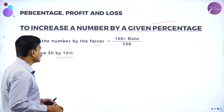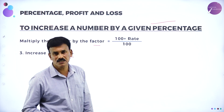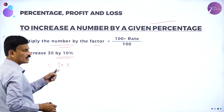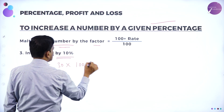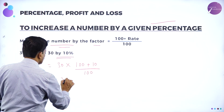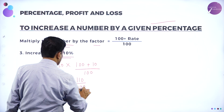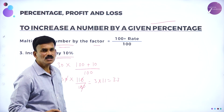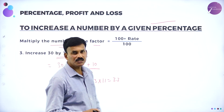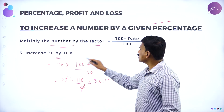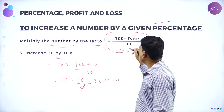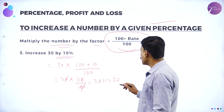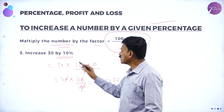Now let us take an example: increase 30 by 10 percent. So this is equal to 30 multiplied by the factor — 30 into 100 plus 10 divided by 100, that is 30 into 110 divided by 100. The zeros cancel, giving 3 into 11, which is equal to 33. So 33 is the required answer. Increasing 30 by 10 percent gives us 33.